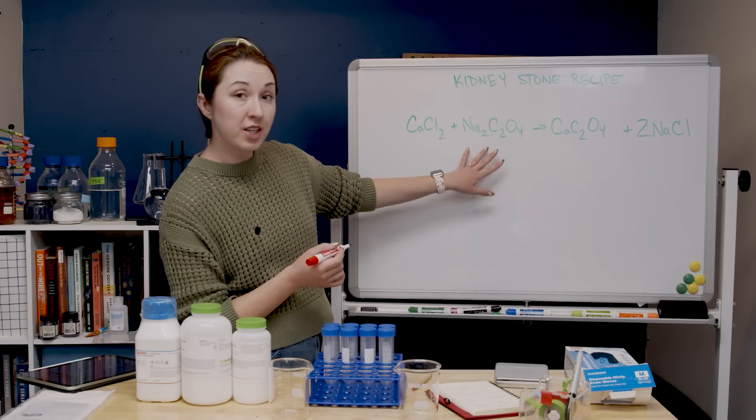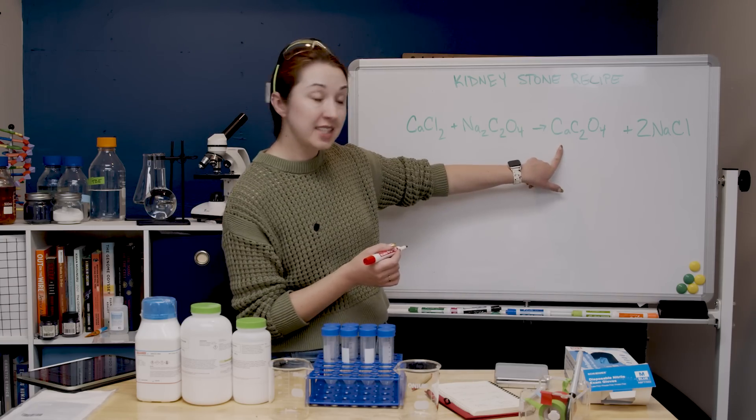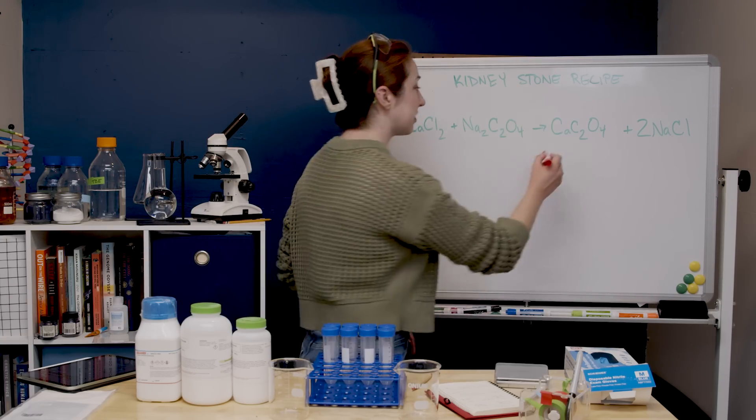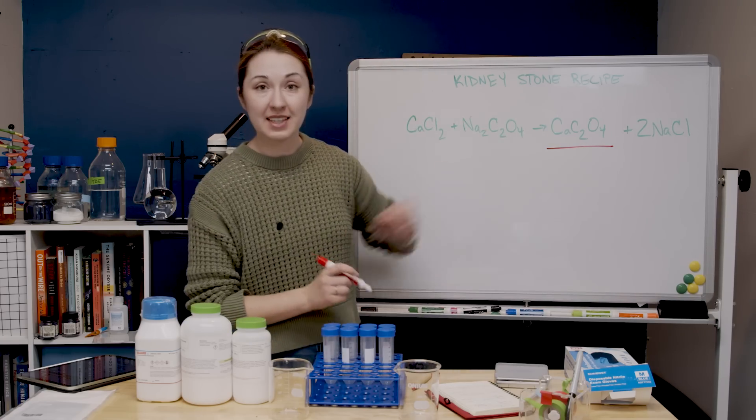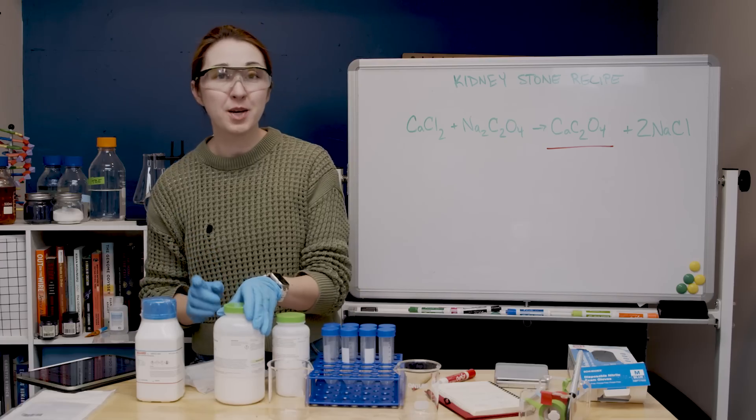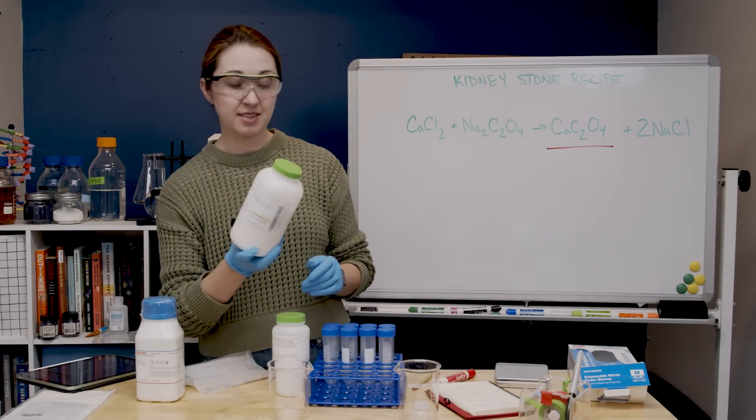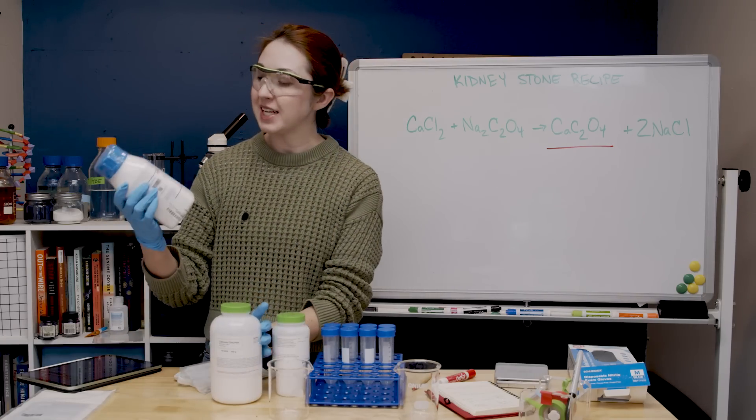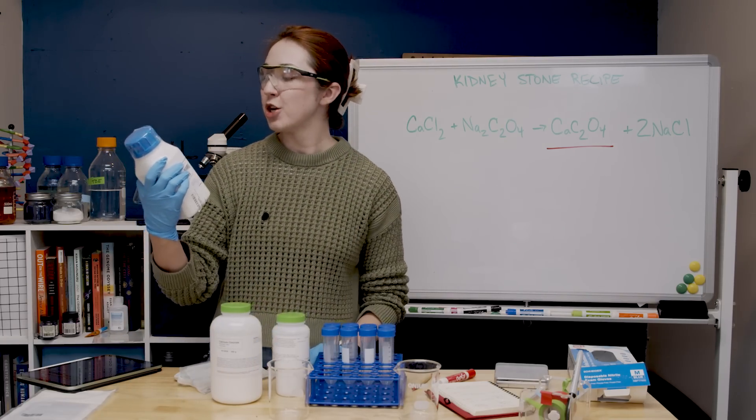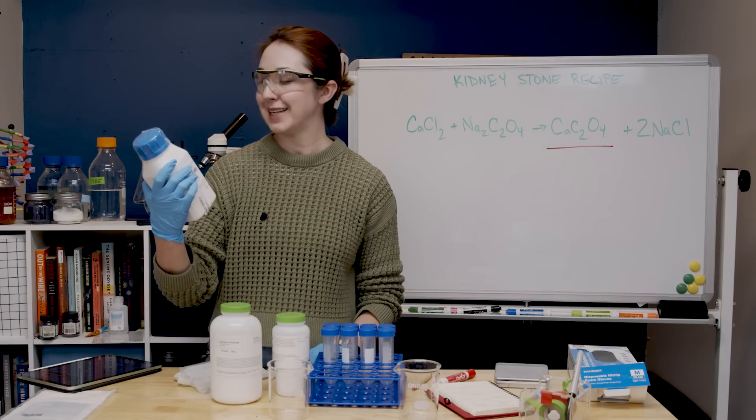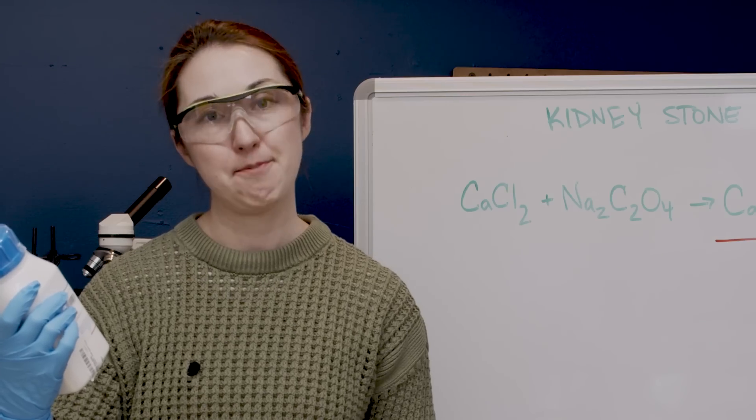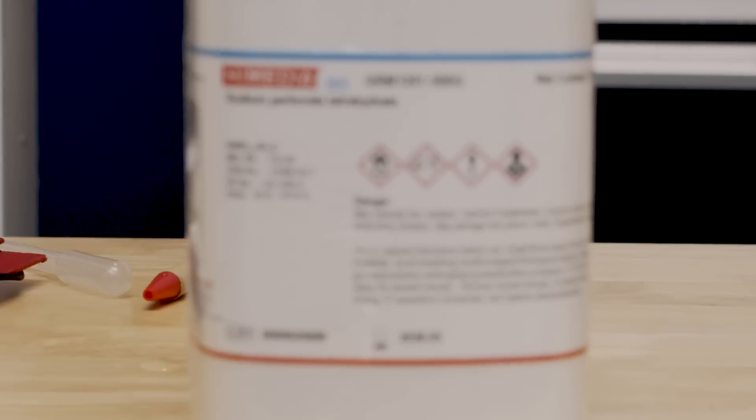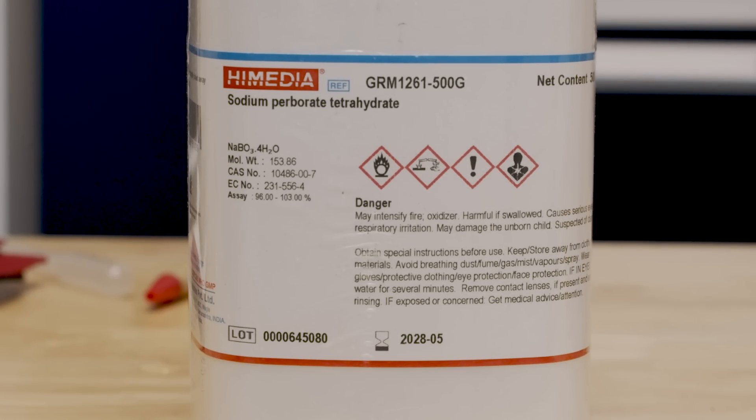My plan was to mix calcium chloride with sodium oxalate and then get out calcium oxalate and salt. This is what I wanted, that's the calcium oxalate. However when I opened up my package from Amazon I did have calcium chloride. That's great, but then instead of the sodium oxalate they sent me sodium perborate tetrahydrate. What's that? I noticed because it had a lot more danger warnings on it than I anticipated.